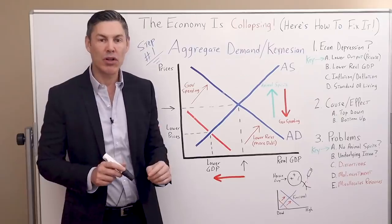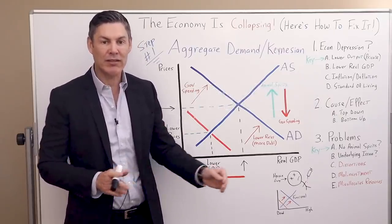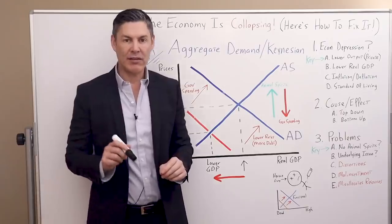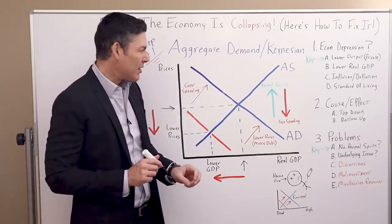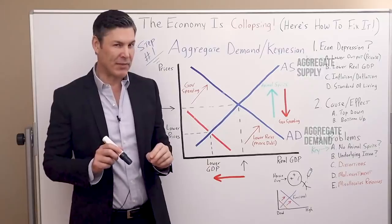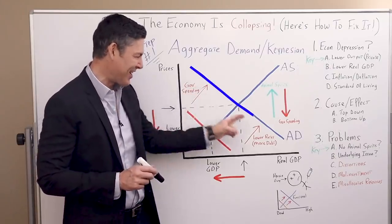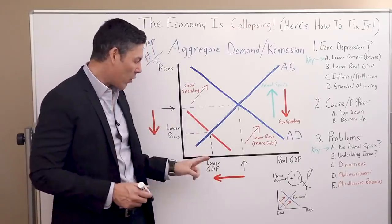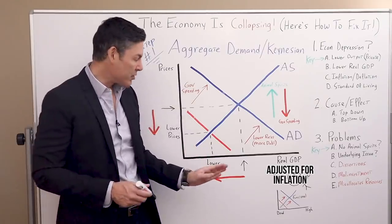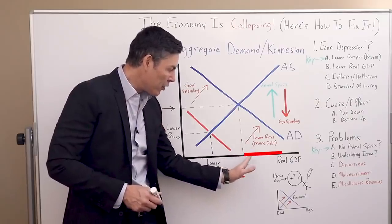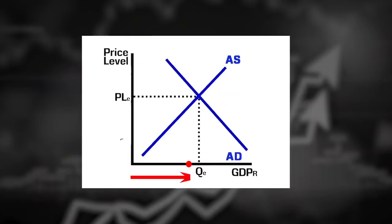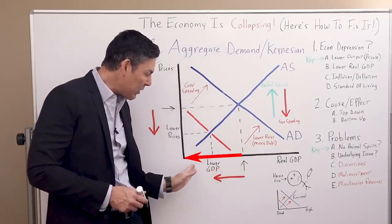The Austrian approach is more to look at psychology and let the economy work itself out through the actions of the individual. One of the main models the Keynesians and mainstream economists use is an aggregate supply and aggregate demand curve — which is interesting because they're not curves at all, they're straight lines. The horizontal line on the bottom represents real GDP adjusted for inflation. As this dotted line moves to the right, real GDP goes up; as it moves left, GDP goes down.